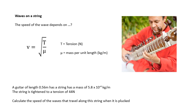For example, a guitar string of length 0.56 meters has a string of mass 5.8 times 10 to the minus 4 kilograms per meter. The string is tight to a tension of 44 newtons. Calculate the speed of the waves.